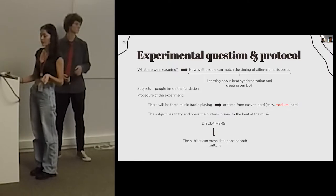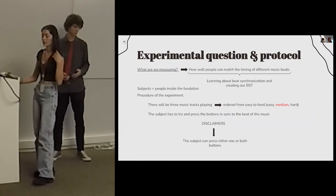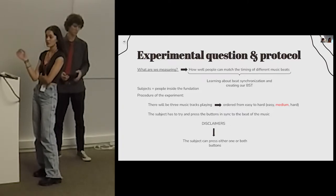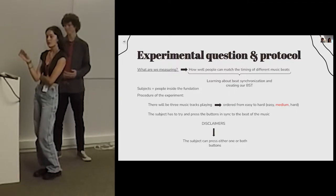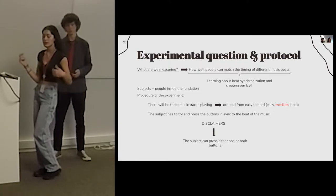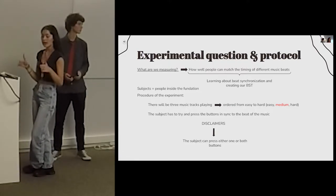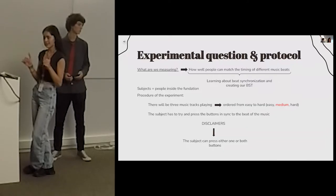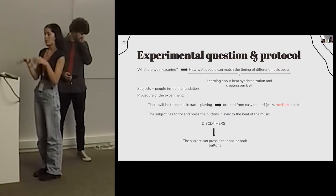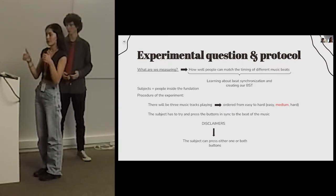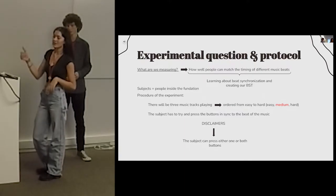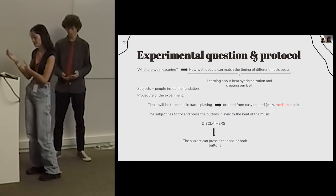During our experiment, subjects had to listen to three different music tracks ordered from easy to medium to hard. With two buttons, they had to match their clicking to the beat of the music. They could either press both buttons alternating or at the same time, or use only one button to tap along with the song.